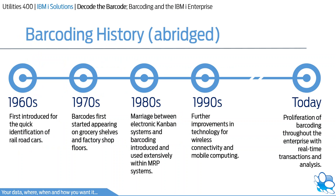As far back as the 1960s, barcodes were used in the industrial work environment, with some of the earliest uses being for the identification of railroad cars. It wasn't until the 1970s when barcodes started appearing on grocery shelves and in factory shops. The marriage between barcoding and enterprise was inevitable. Toyota first introduced Kanban in the 1950s, but the first quantum leap forward in process improvements happened in the 1980s when barcodes were introduced to the Kanban tickets.